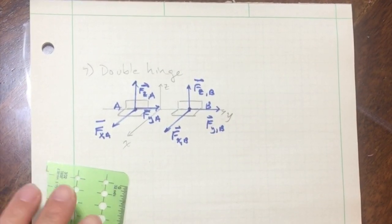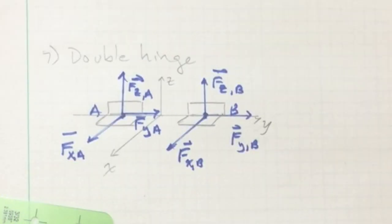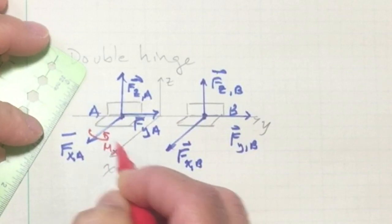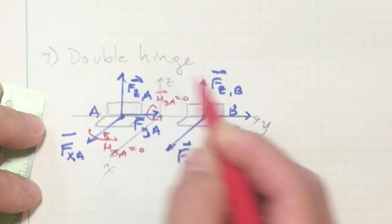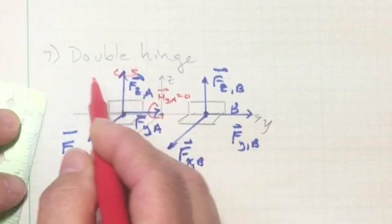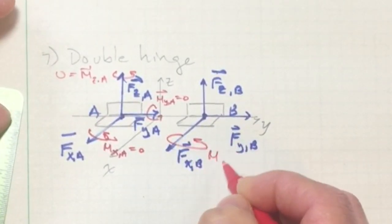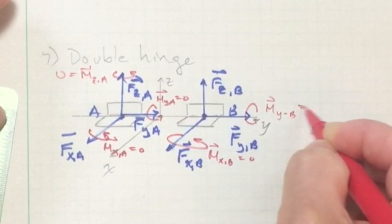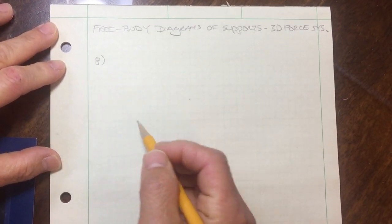When we use two hinges like this, the force reactions developed by the pins are sufficient for equilibrium because they prevent the box from rotating about each of the coordinate axes, so no couple moments are present at each of those pins. Therefore: moment about X at A equals zero, moment about Y at A equals zero, moment about Z at A equals zero, moment about X at B equals zero, moment about Y at B equals zero, and moment about Z at B equals zero.